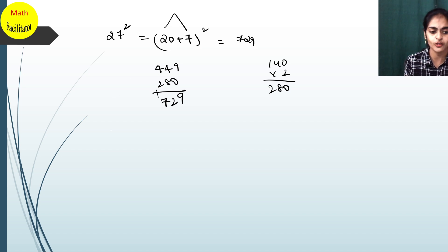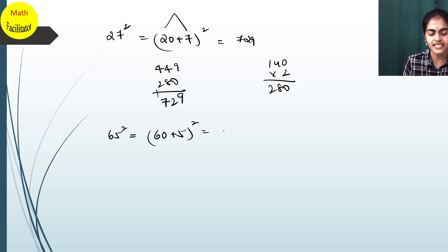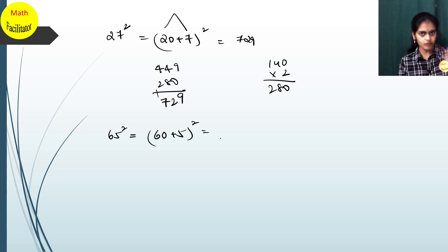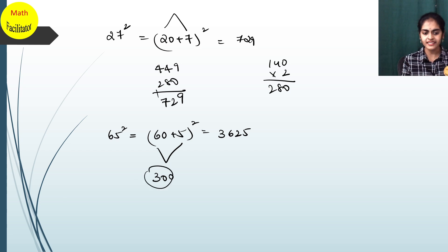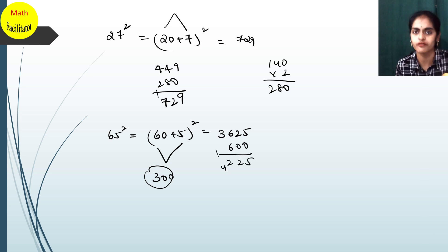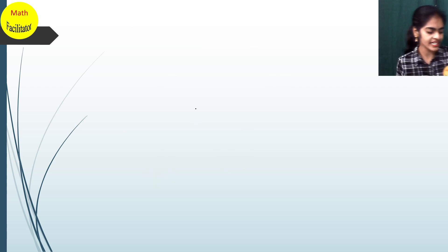Now let's take 65². It is (60 + 5)². 60² = 3600, 5² = 25, so 3600 + 25 = 3625. Now 60 × 5 = 300, and double of 300 is 600. So 3625 + 600 = 4225.